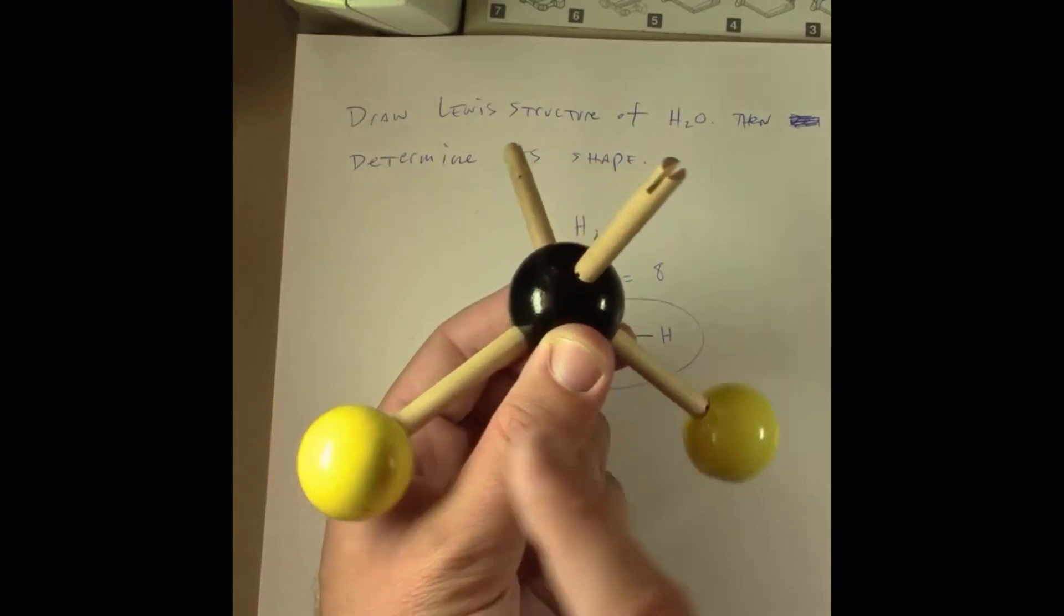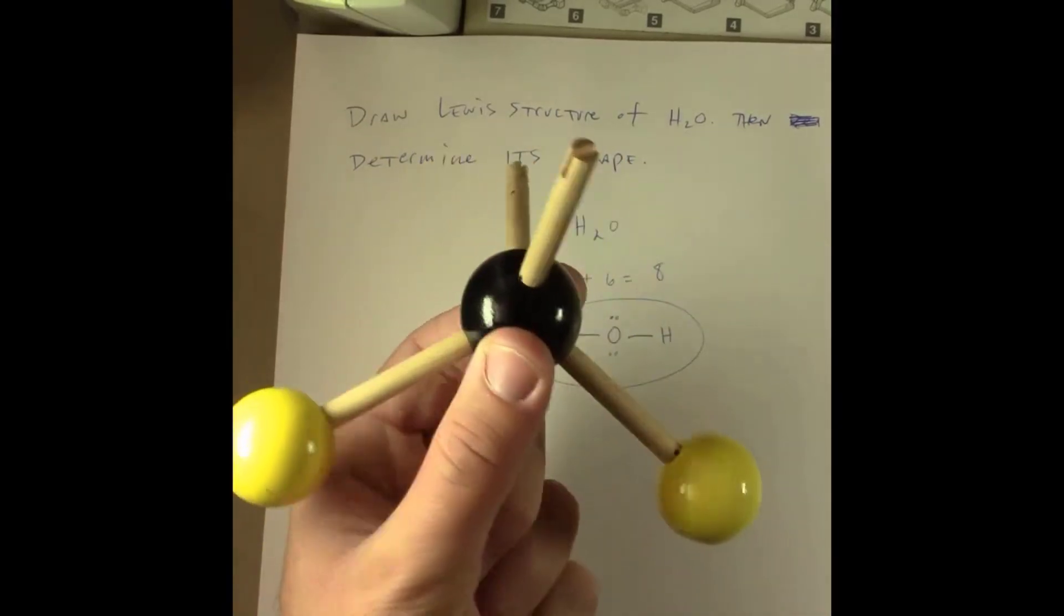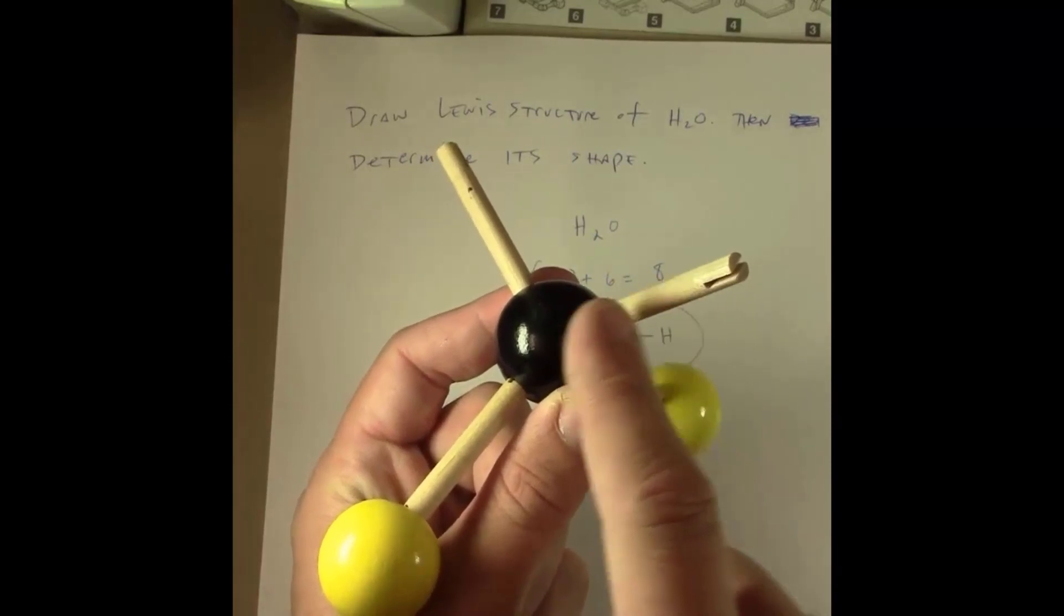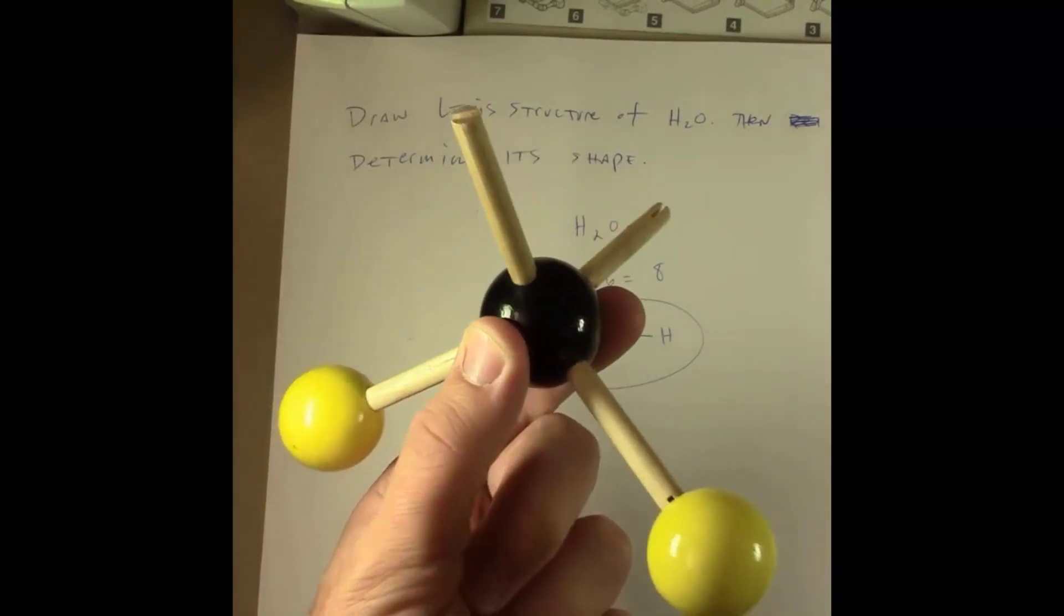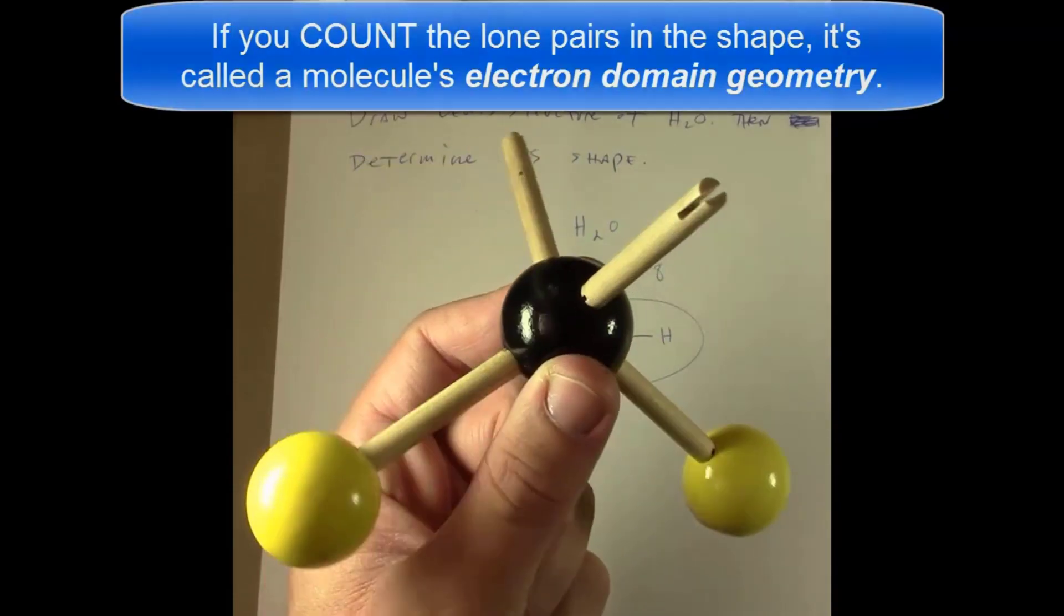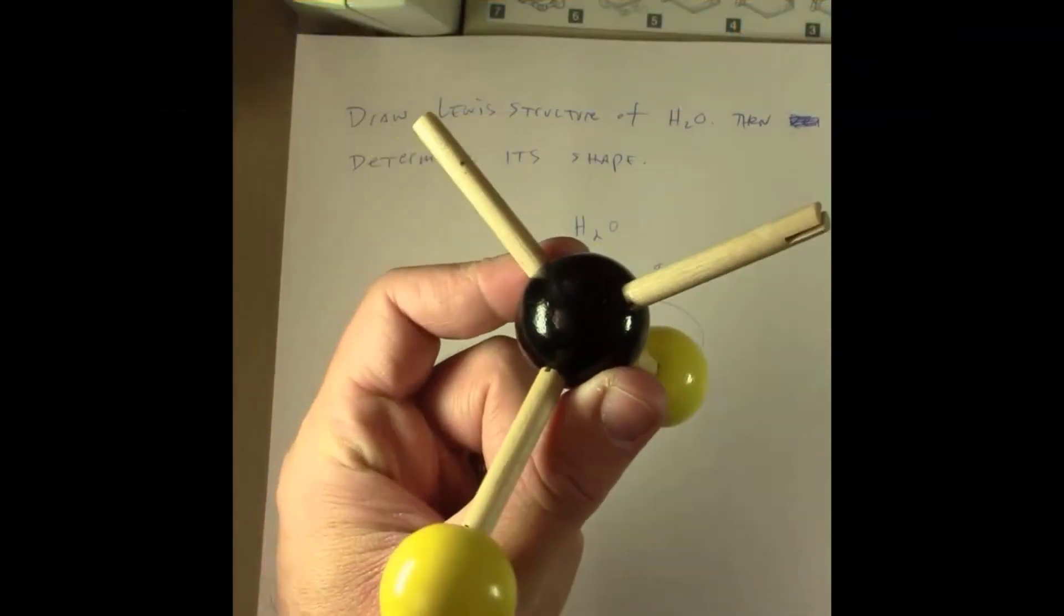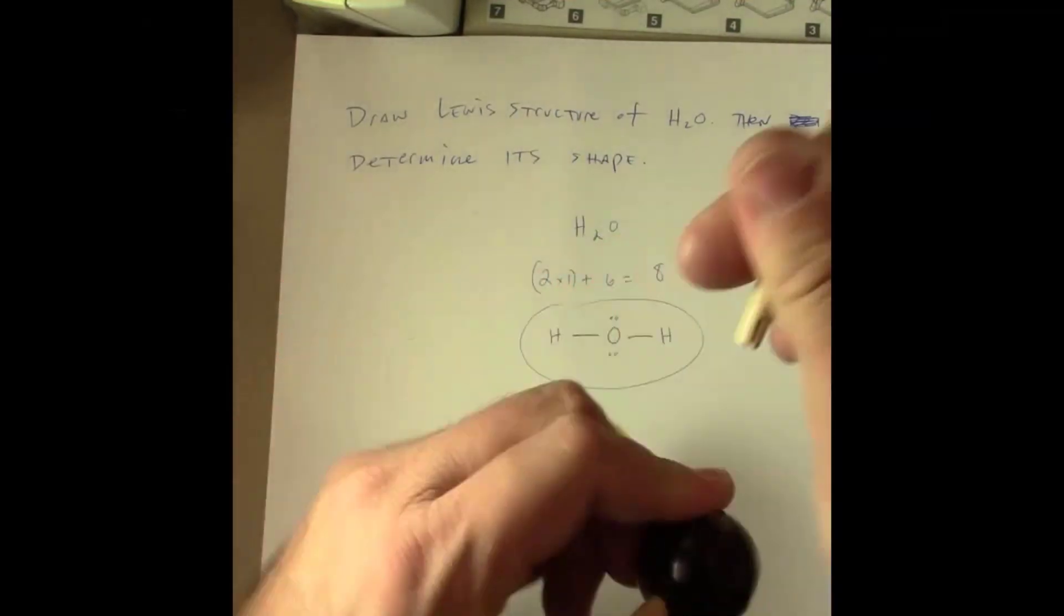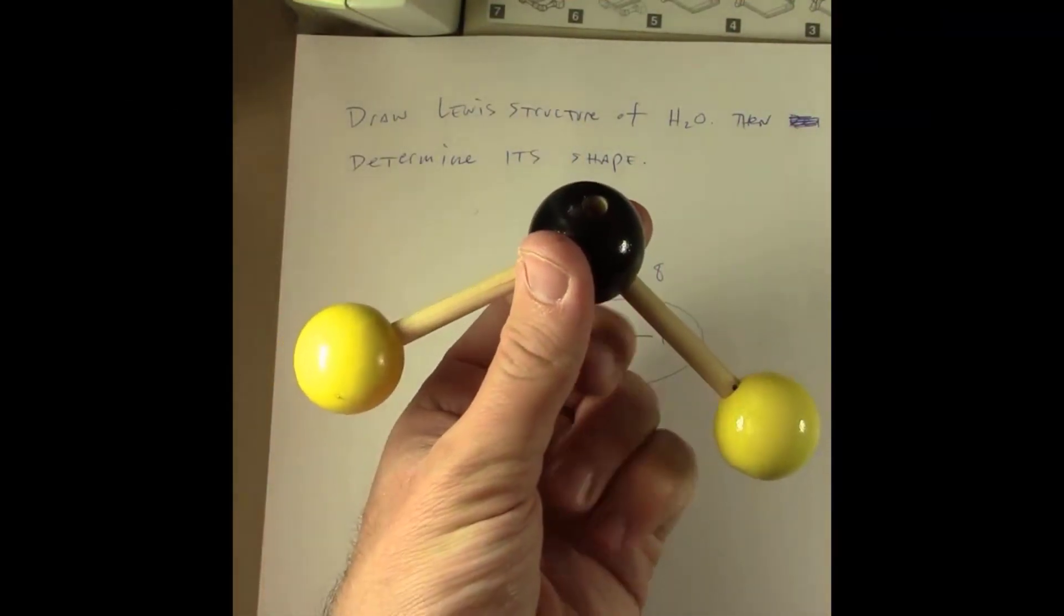Then each of these is a set of bonding pairs connecting the central oxygen to each hydrogen. So what is the shape of this thing? Well, if you're counting the lone pairs as contributing to the shape, then you would call that tetrahedral, just as is the case with carbon tetrachloride.